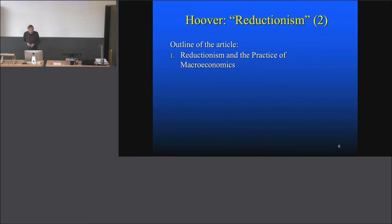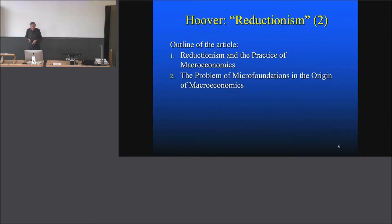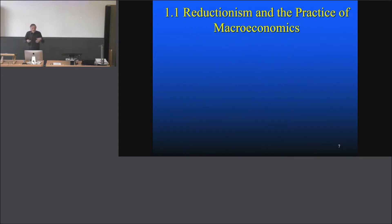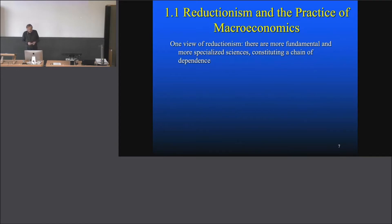This must be a good article with a good author, and we want to understand what he has to say. The outline of the article is: first, reductionism and the practice of macroeconomics; then the problems of microfoundations in the origin of macroeconomics; then intentionality and causality; then against eschatological justification; and recapitulation. Today I'm doing it a little slower, but next time I'll speed up. I'm now presenting without many critical remarks, just trying to clarify what Hoover is saying. In his first section he says that one view of reductionism is...